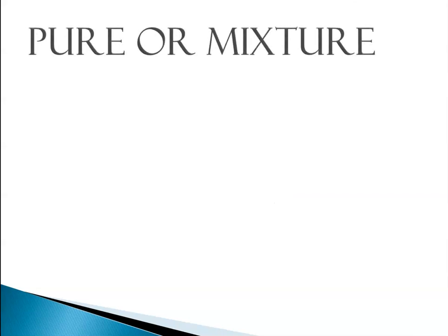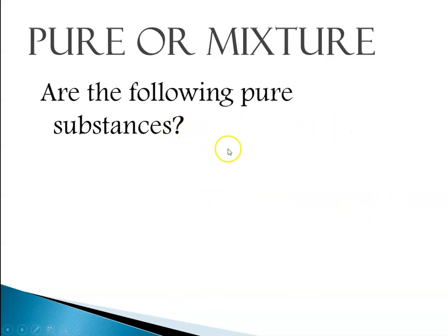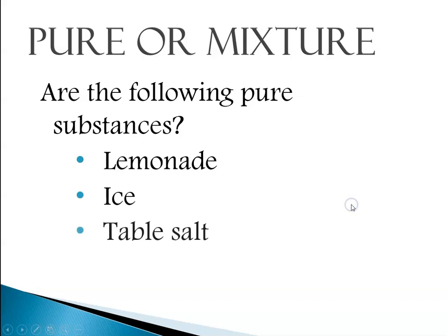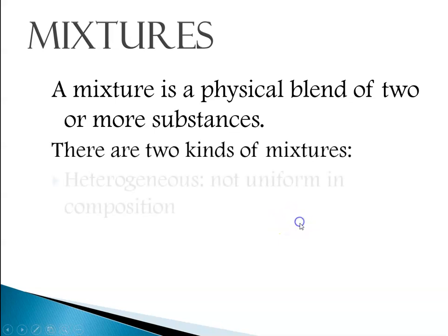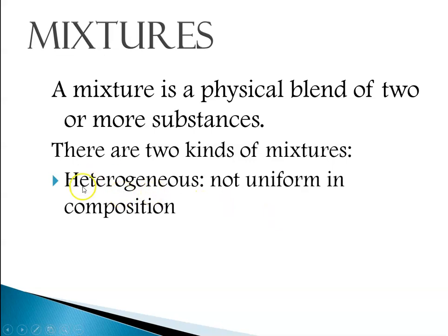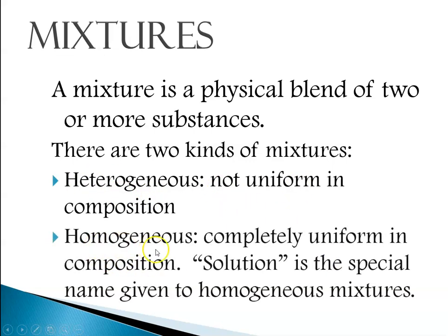Now let's talk about pure substances versus mixtures. Lemonade is a mixture — it's lemon juice and water. Ice is a pure substance; it's solid water. Table salt is a pure substance — pure sodium chloride. A mixture is a physical blend of two or more substances, and there are two kinds: heterogeneous mixtures, which are not uniform in composition, and homogeneous mixtures, which are completely uniform in composition. Homogeneous mixtures in chemistry are given the special name 'solution.'